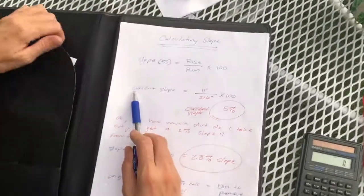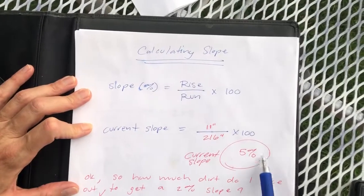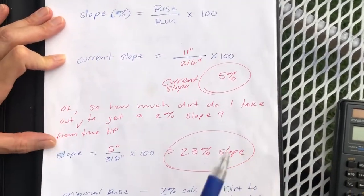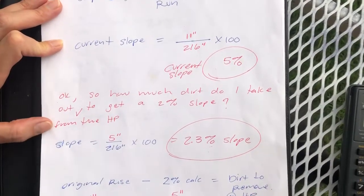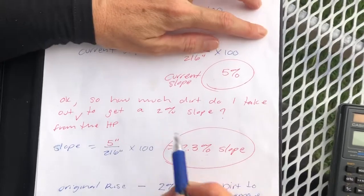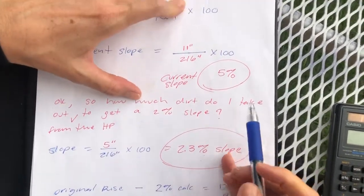We've recognized that our current slope is 5%, and our question is: how much dirt do I need to take out from the high point to get to a 2% slope?